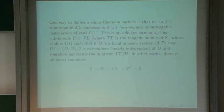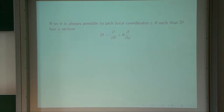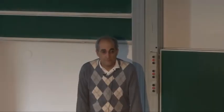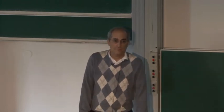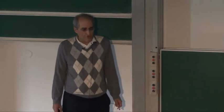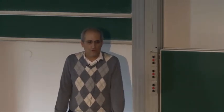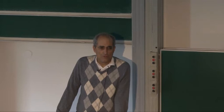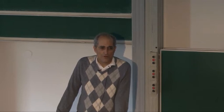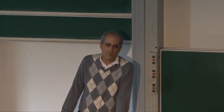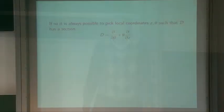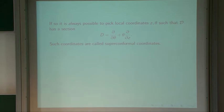Such coordinates aren't unique — picking them is analogous on an ordinary Riemann surface to picking a local complex parameter z, which is far from unique. All the interest of the theory comes from how the picture fits together globally. Coordinates in which curly D has a section of this standard form are called superconformal coordinates.